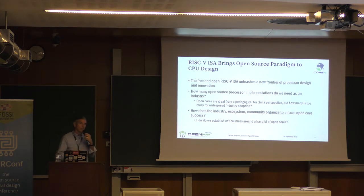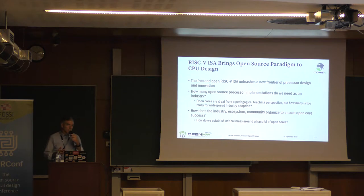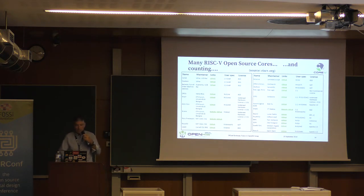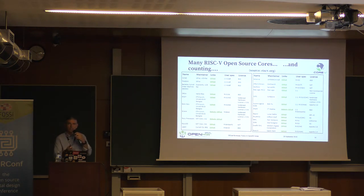Think back to the early days of Linux — there were literally dozens of Linux distributions, but now there are really about five or six popular ones. We're going to need that same kind of focus in our ecosystem. The challenge for us as an industry is how do we achieve critical mass around a handful of solid implementations across different toolchains. There are lots of open source RISC-V cores available — this snapshot I took a few months ago shows them all — but that speaks to the critical mass problem.